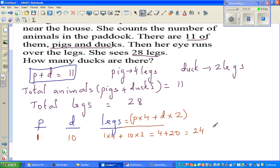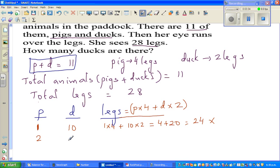So let us take now 2 pigs. If you take 2 pigs, how many ducks should be there? Because pigs plus ducks is 11, so this has to be 9.